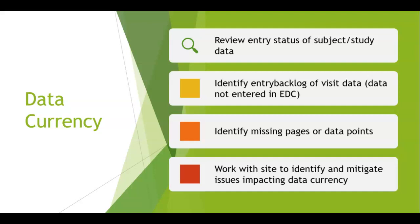The CRA will also help identify missing pages or data points. Maybe the site entered most of the visit data in a timely fashion, but a particular page or data point is missing. For example, if a patient dies on the study, you typically need to include key information from the autopsy or findings so that you can add to the knowledge of whether the death was related to the drug. So a CRA might say: I see that you entered the serious adverse event that the patient has died, but you have yet to enter any data from the autopsy report.